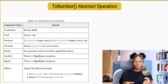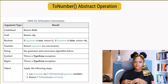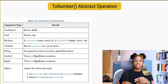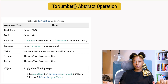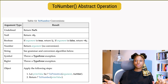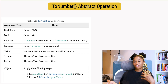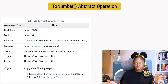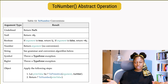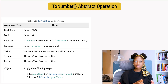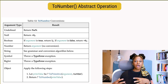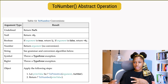For symbol and BigInt, it will just throw a type error exception. If the value is a non-primitive value — any of the object types — it will first need to be converted to its primitive equivalent. I have a video explaining how non-primitive values are converted to primitive values.